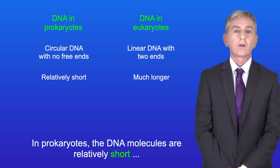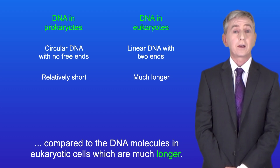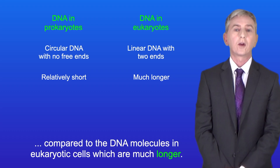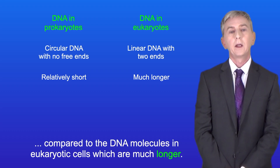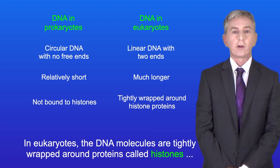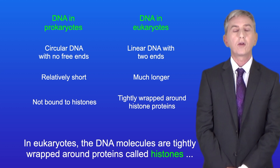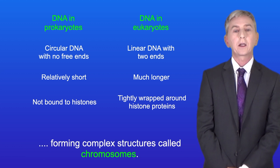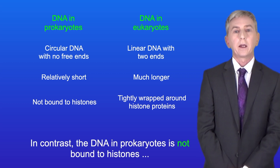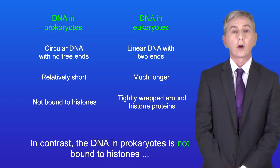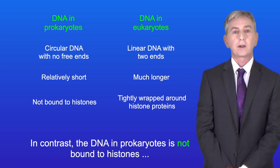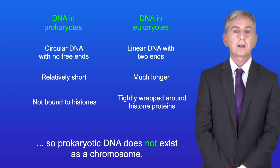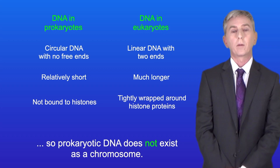In prokaryotes the DNA molecules are relatively short compared to the DNA molecules in eukaryotic cells, which are much longer. In eukaryotes the DNA molecules are tightly wrapped around proteins called histones, forming complex structures called chromosomes. In contrast, the DNA in prokaryotes is not bound to histones, so prokaryotic DNA does not exist as a chromosome.